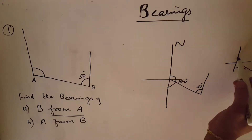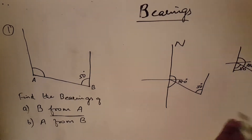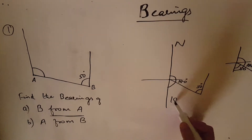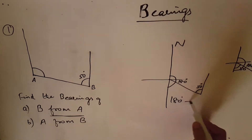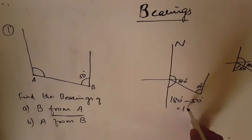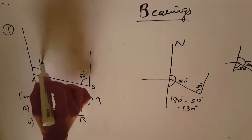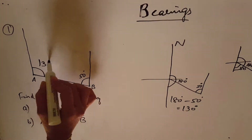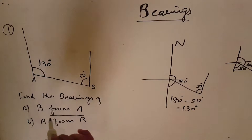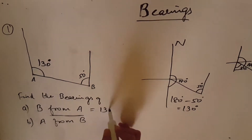This is 180 degrees, so you have to minus: 180 minus 50 is equal to 130 degrees. So this value is 130 degrees — B from A value is 130 degrees.